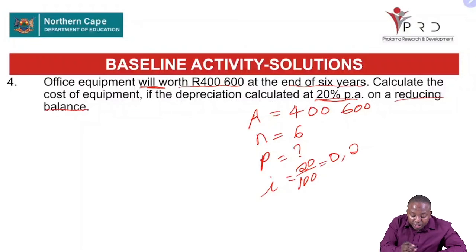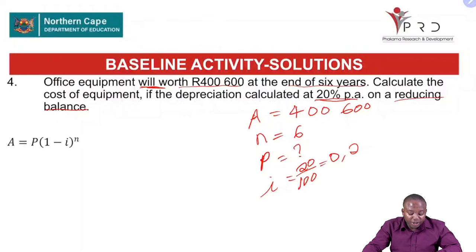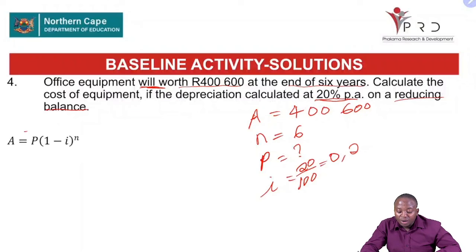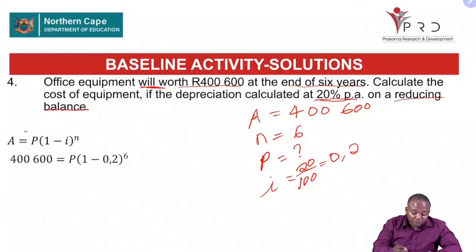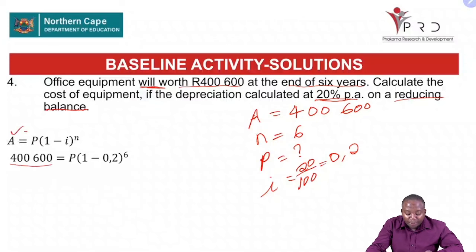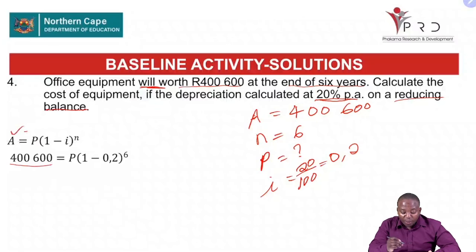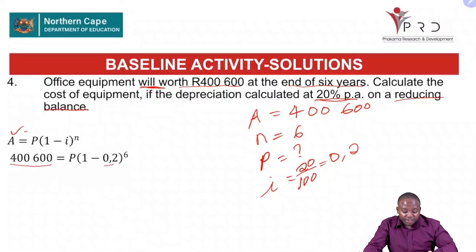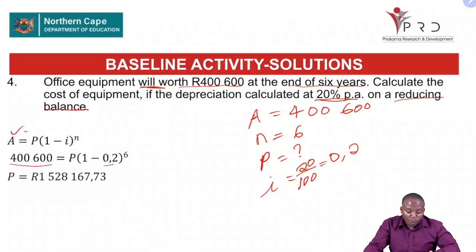Using the reducing balance formula, A equals P(1 minus i) raised to the power n. We substitute: 400,600 equals P times (1 minus 0.2) raised to the power 6. We solve for P and find the present value is 1,528,167.73.